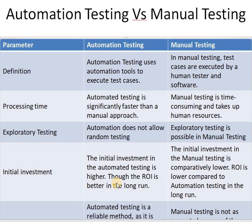Our next parameter is initial investment. For automation testing, the initial investment is higher because it requires some tools and software. In manual testing, the initial investment is very low as compared to automation testing.